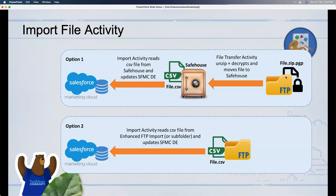Import File has two configuration options. The most common flow is: File Transfer brings an encrypted or zipped file from FTP into Safe House, decrypts/unzips it, and then Import File reads the resulting CSV or text-delimited file from Safe House into Marketing Cloud. If the file is a plain CSV directly on the FTP with no compression or encryption, you can skip File Transfer and have Import File pull it directly from FTP.